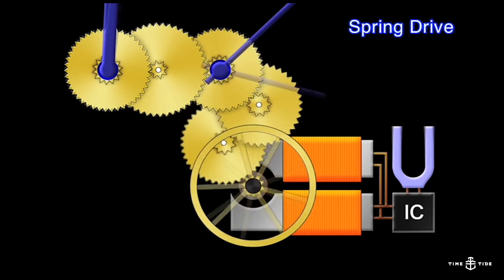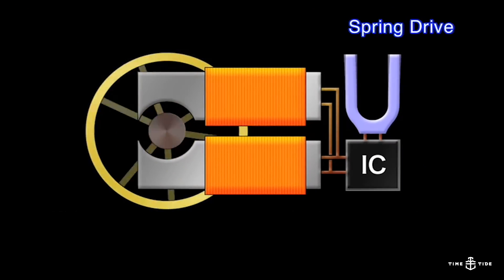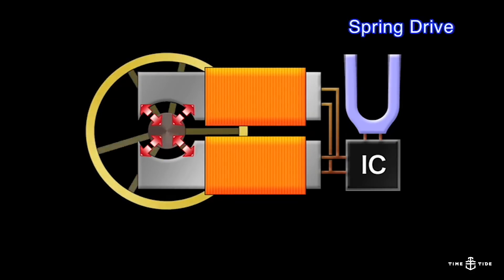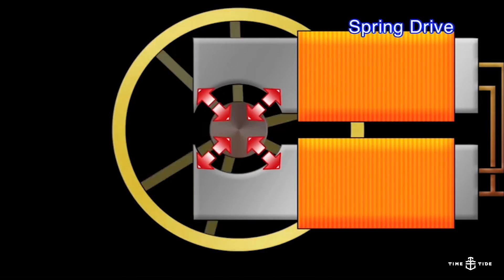And here's where things get quite interesting. The centre of this regulator is a glide wheel which uses electromagnets to slow the energy from the mainspring without any friction while simultaneously generating electrical current which is in turn run through an integrated circuit and a quartz crystal.